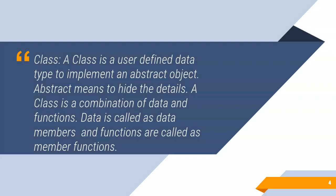Abstract means to hide the details. A class is a combination of data as well as methods. Data is called as data members and functions are called as member functions.